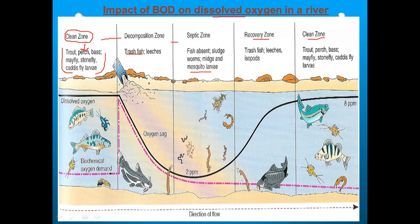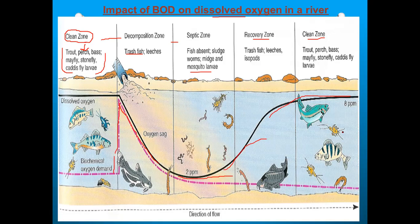Slowly the decomposition level increases — decomposition doesn't start abruptly, it increases gradually and the oxygen cycle is affected. At the lowest oxygen stage, there are no fish, no reptiles, no other categories, so bacteria grow and mosquito larvae are produced. In the recovery stage, trash fish and leeches come back into existence. When it returns to the clean zone, dissolved oxygen rises and the biochemical demand is low.